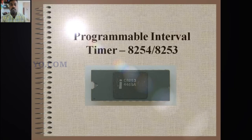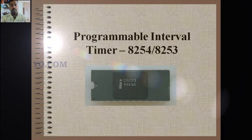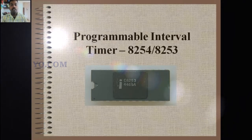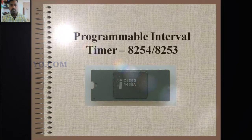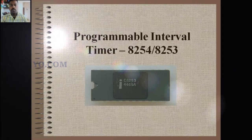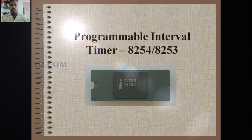Welcome students. In this lesson we are going to study the Programmable Interval Timer, IC number 8254 or 8253 — mostly it is called as 8254. A timer generates time delay by producing square pulses with on time and off time. This timer generates pulses and they are given to other devices to operate.